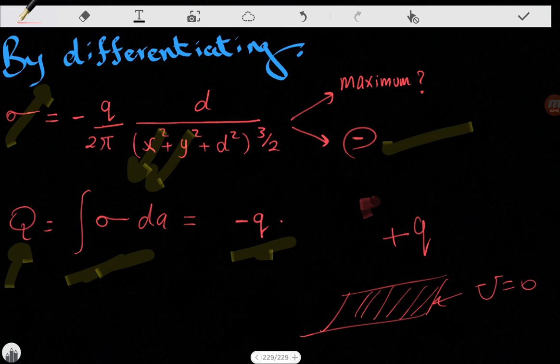...a negative induced charge with a quantity that equals negative q are going to be on the surface. So the induced charge is equal to minus q. And that's it for today, see you next time.